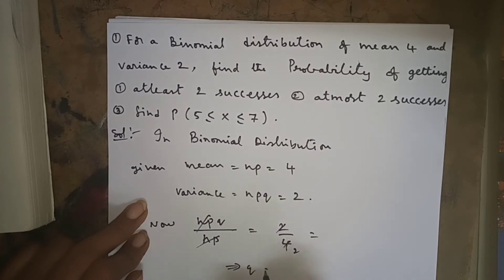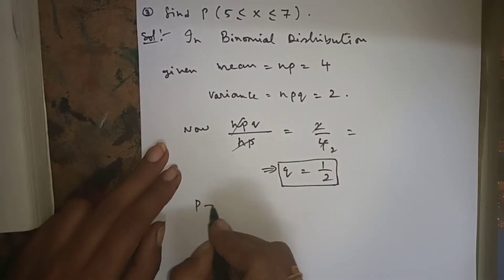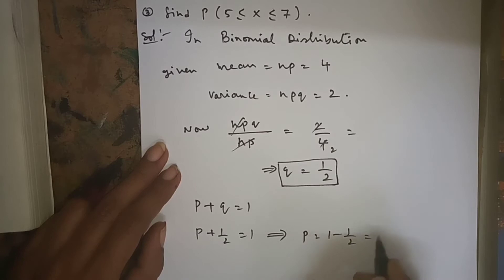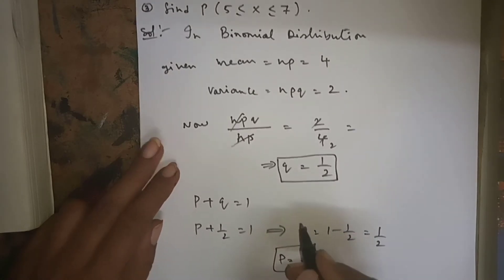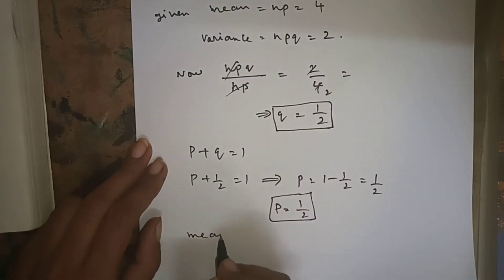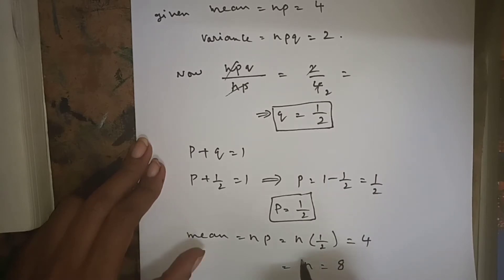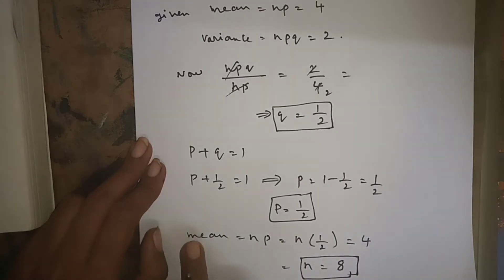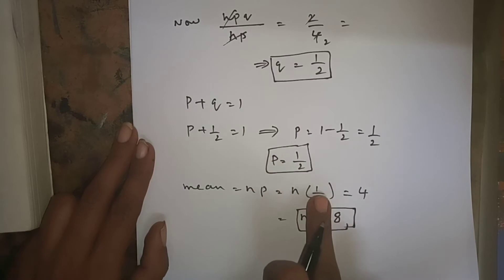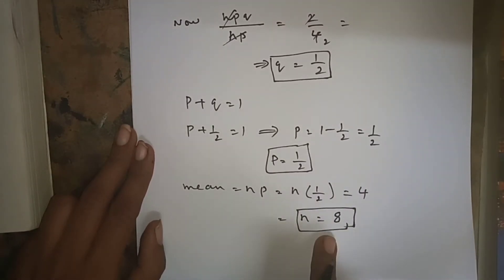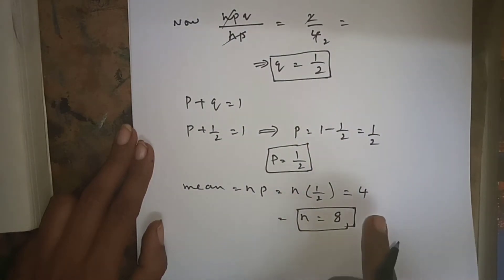Since q = 1/2 and p + q = 1, we get p = 1 - 1/2 = 1/2. Now using mean = np: n * (1/2) = 4, so n = 8. We have found p = 1/2, q = 1/2, and n = 8.